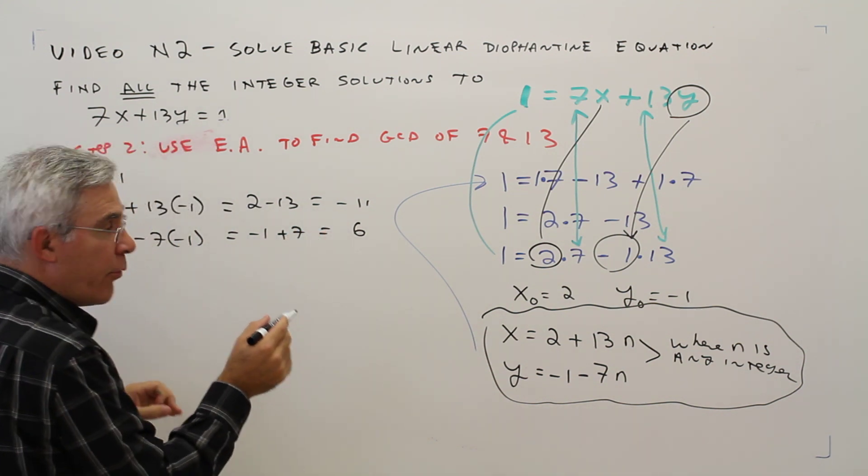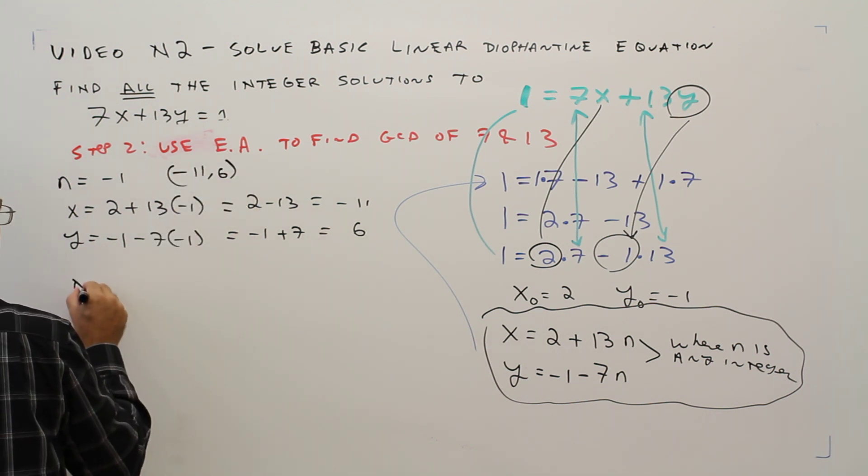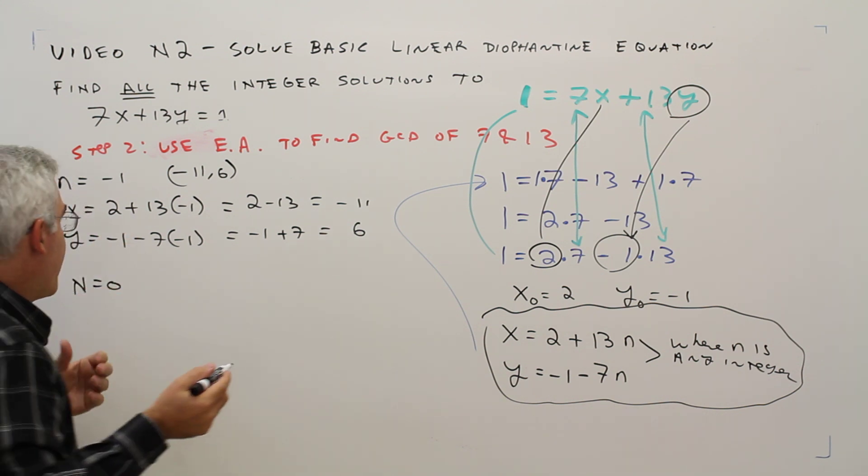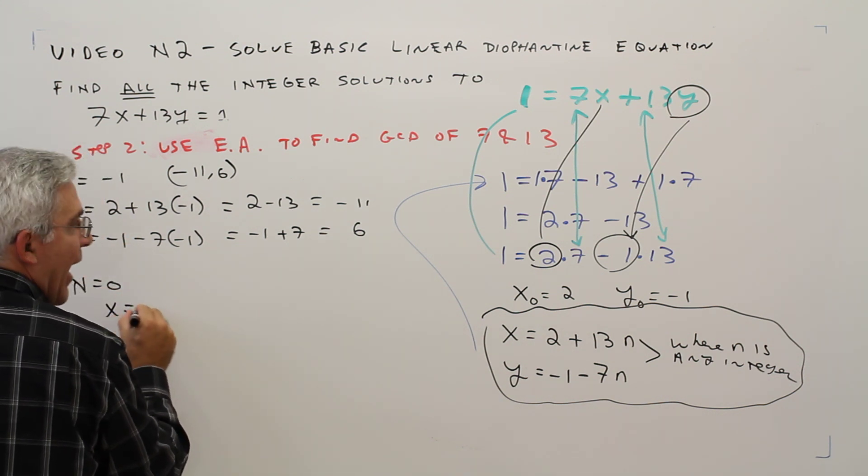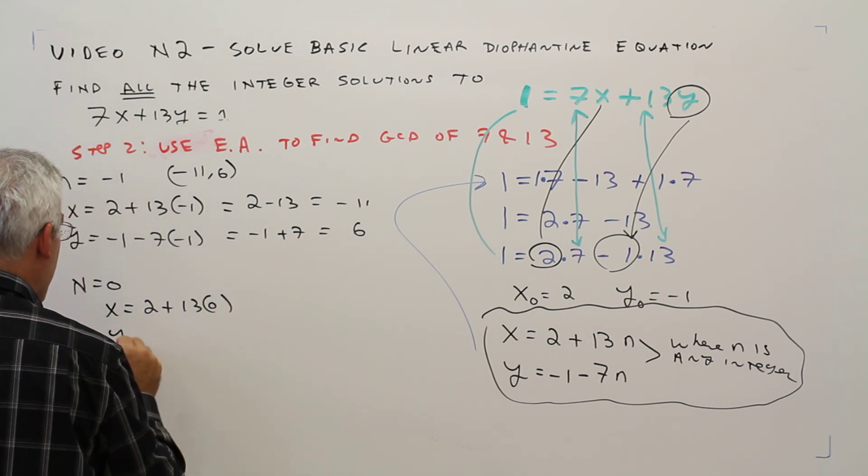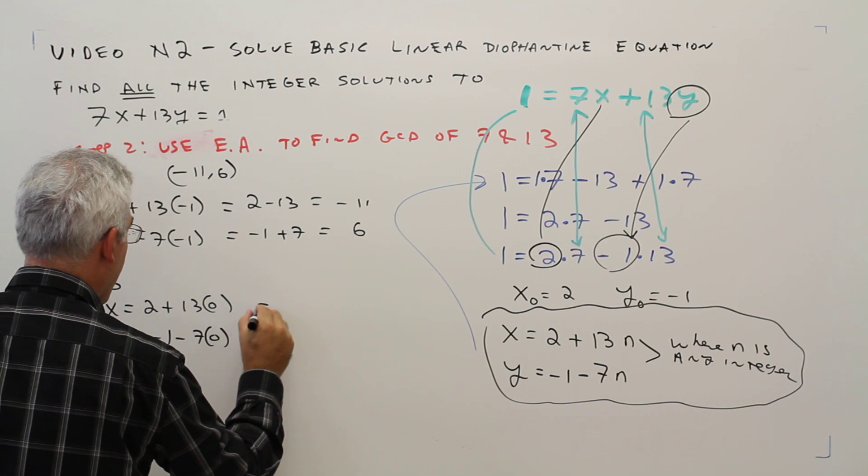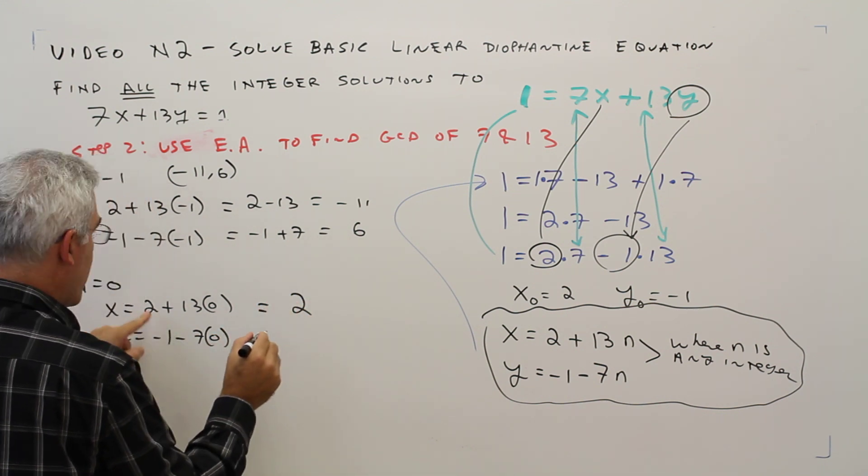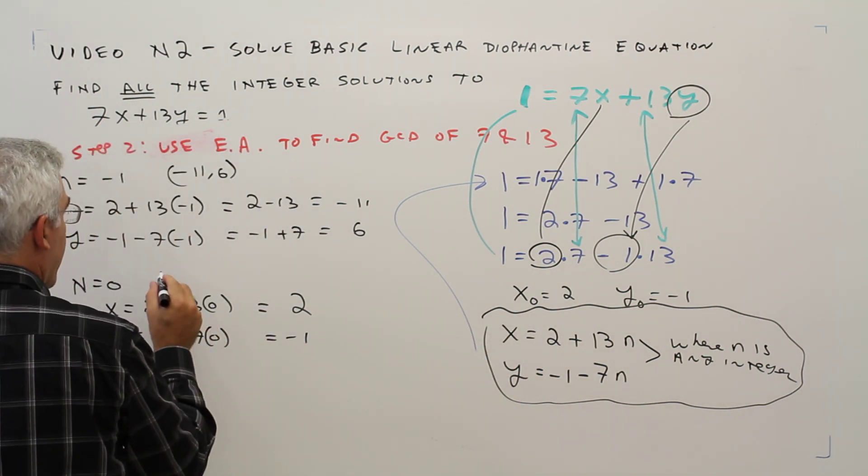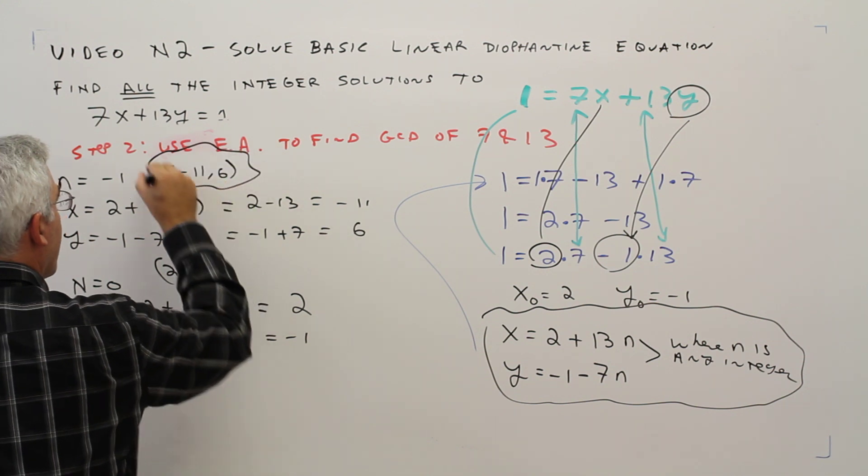So I'll just write that as an ordered pair. That would be negative 11 by 6. If n equals 0, x equals 2 plus 13 times 0, y equals negative 1 minus 7 times 0, that's going to be 2, that's going to be negative 1, hence my naughts. I'll write that as an ordered pair: 2 comma negative 1, and I'll circle them.